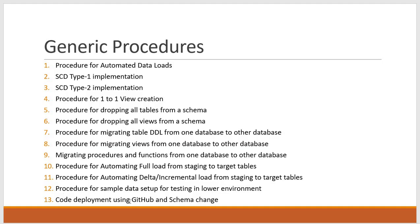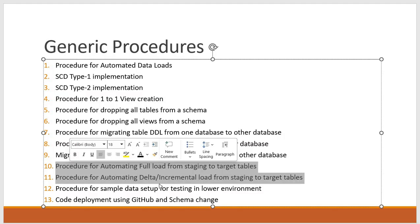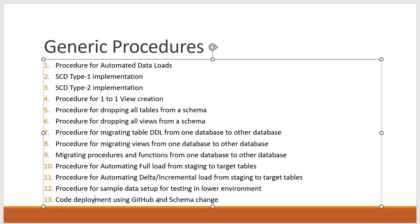Then I will explain the code deployment process using GitHub and schema change. Some of these are very important in real time — for example, full loads and data loads are implemented in each and every project, and code deployment is mandatory in each and every project.